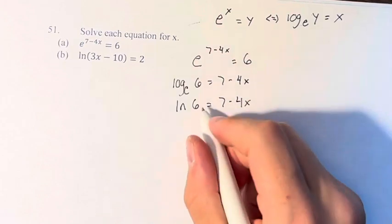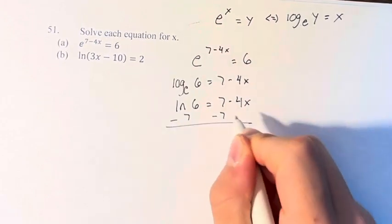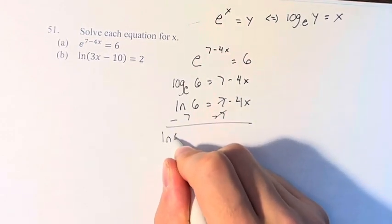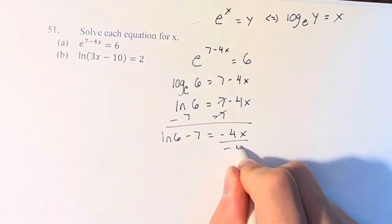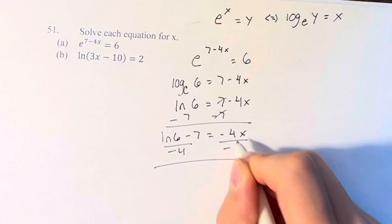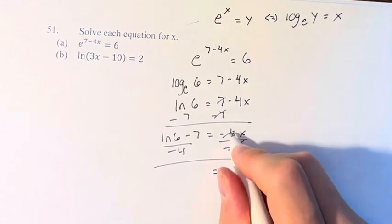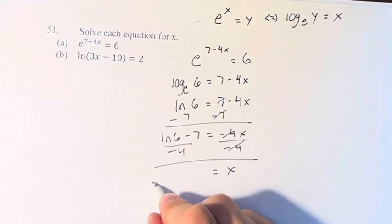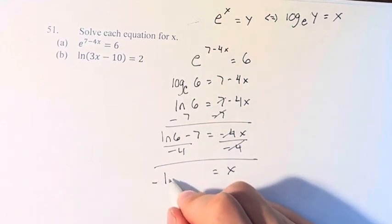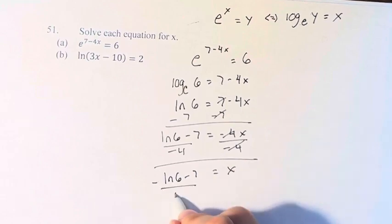And now we just have to solve for x. Subtract 7 from both sides. This cancels. ln of 6 minus 7 equals negative 4x. Divide by negative 4. These cancel, and we're left with just x is equal to negative, I'll move the negative out front, ln of 6 minus 7 over 4.